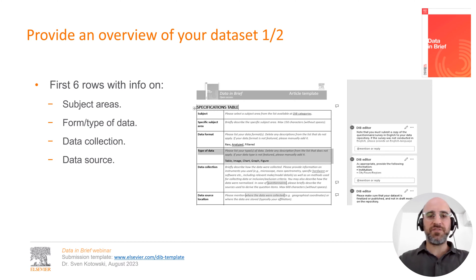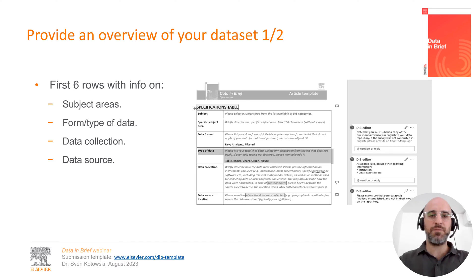The first six rows of the specifications table are relatively straightforward. You are asked to provide information on your data set's subject area, whether your data set contains only raw or also analyzed or filtered data, and what kind of visual elements such as tables, images, or graphs your data set contains. The data collection row asks for a brief overview of the data acquisition process, while the data source location row asks for specifying where the data were collected and/or where they are stored. In case your data set contains secondary data, the data source location row is also where you list your primary data sources.